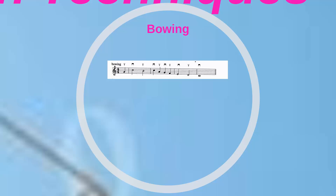The tone of the bowed string instrument is normally produced by drawing the bow across one or more of the strings. When the bow is drawn away from the instrument, it is referred to as a down bow, and when it is drawn toward the instrument, it is called an up bow.